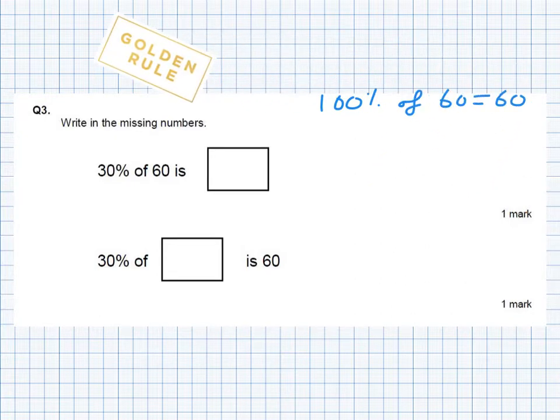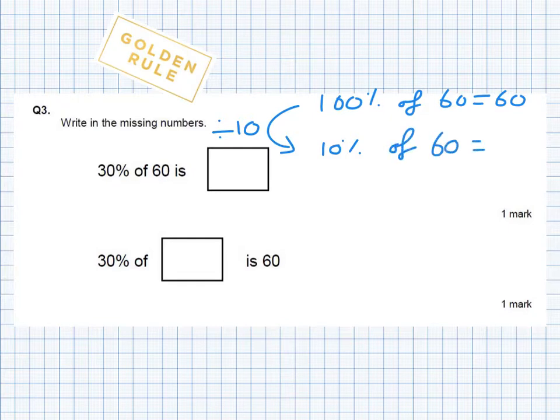So if I know 100% of 60 is 60. Divide 100% by 10, I get 10%. 10% of 60 is then, I divide 60 by 10 as well, 6. So 10% of 60 is 6.